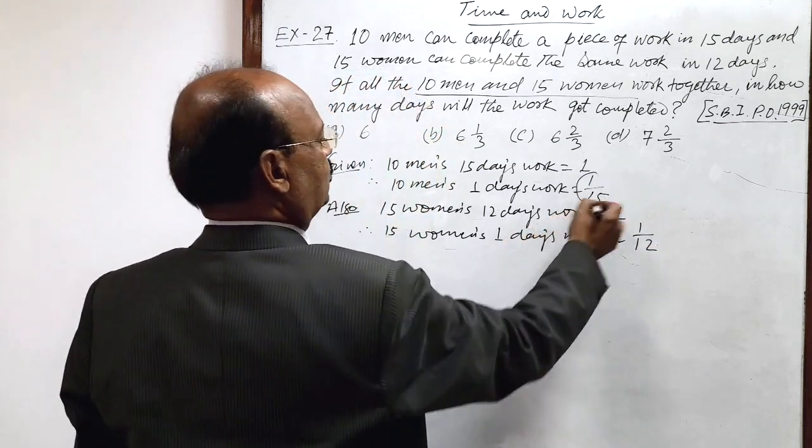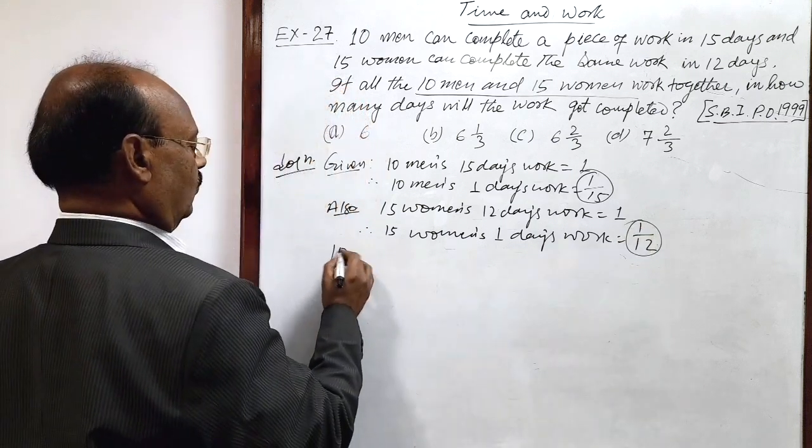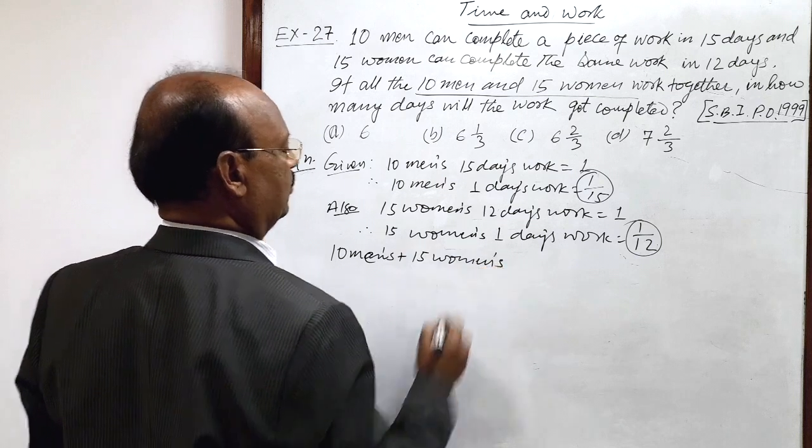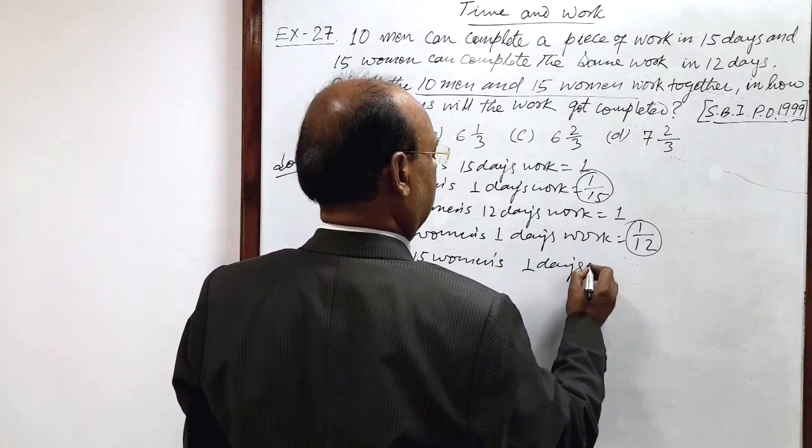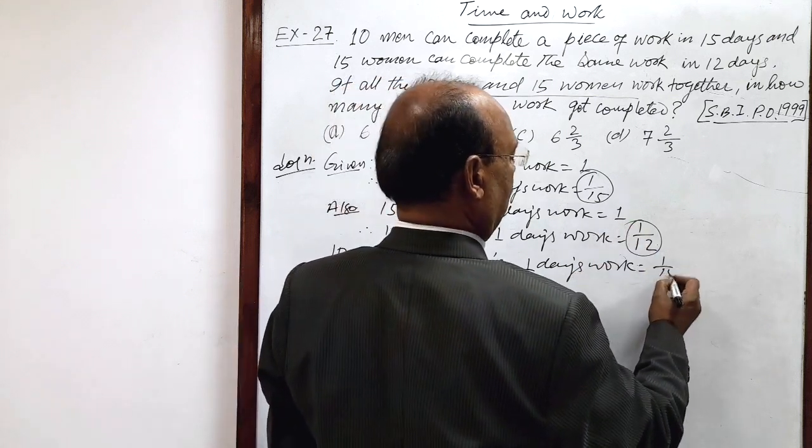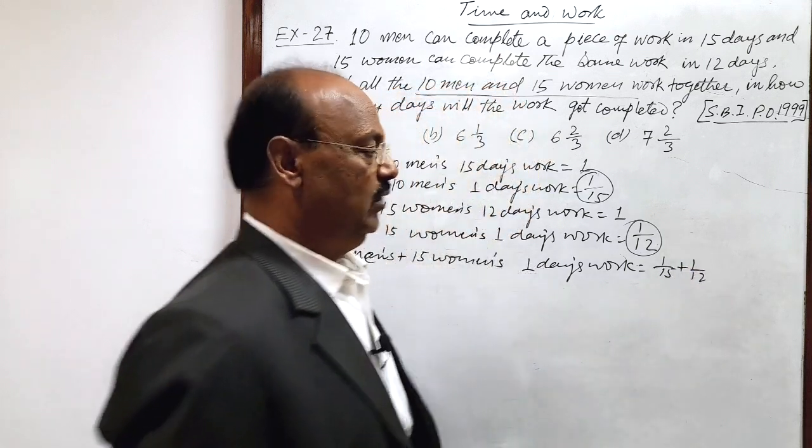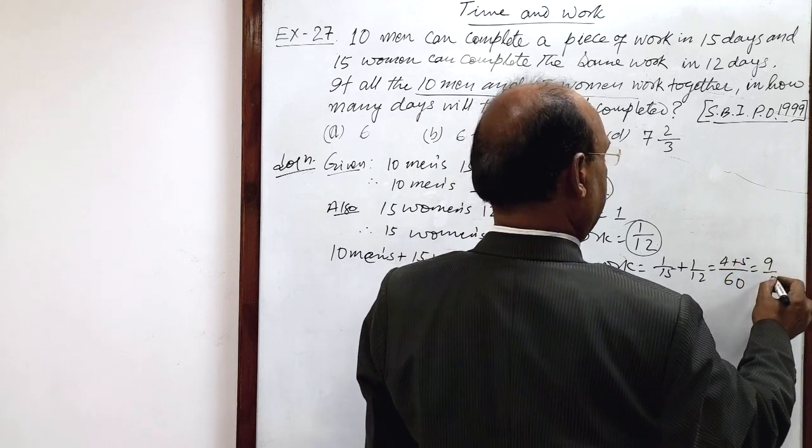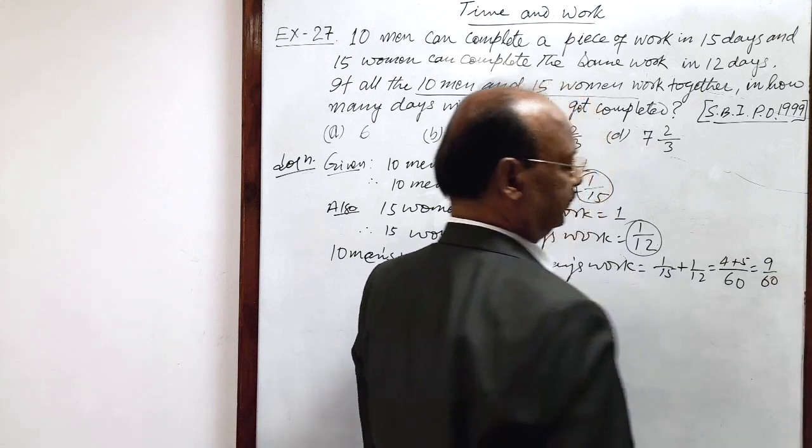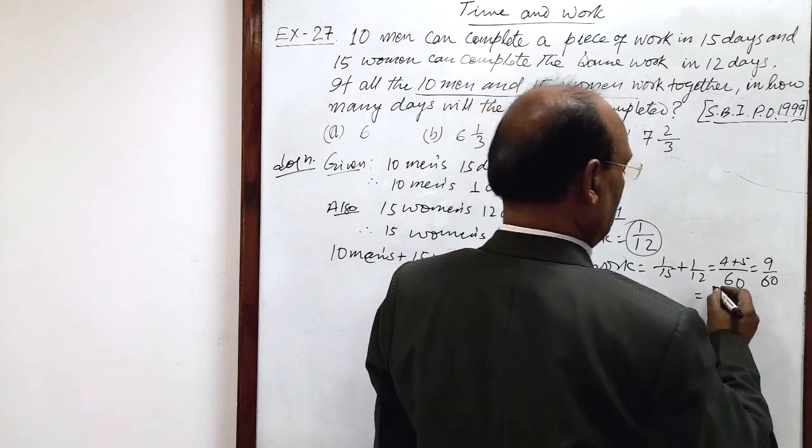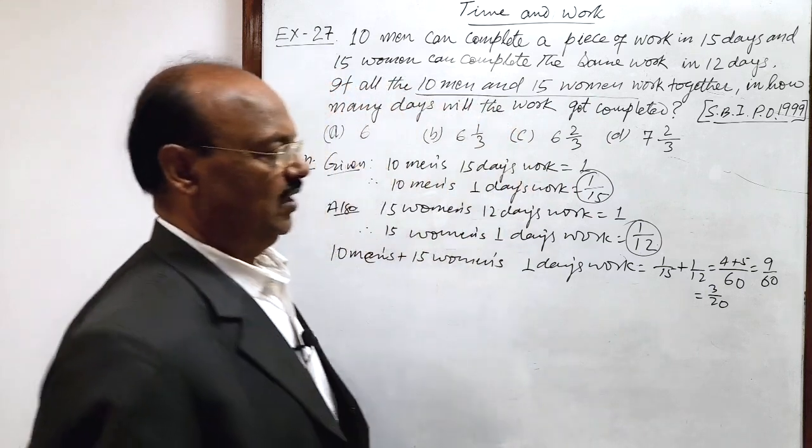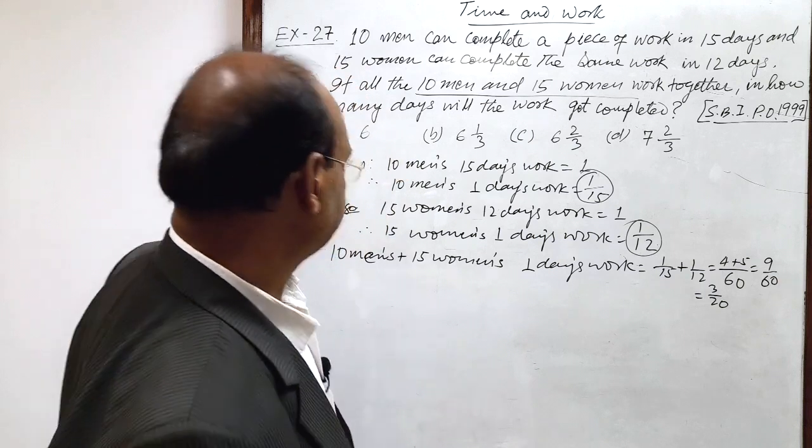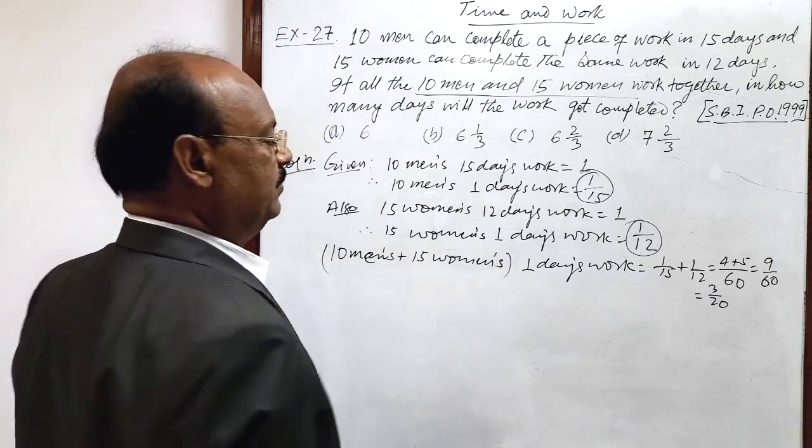Now we will add these two numbers together and we will find out 10 men's plus 15 women's 1 day's work is equal to how much? 1 by 15 plus 1 by 12. Let us simplify it. LCM will be 60. 15 times 4 are 60, 12 times 5 are 60. So 9 by 60 is equal to 3 by 20. Cancel 9 and 60 by 3. So 3 by 20, correct? This is 10 men's and 15 women's 1 day's work.